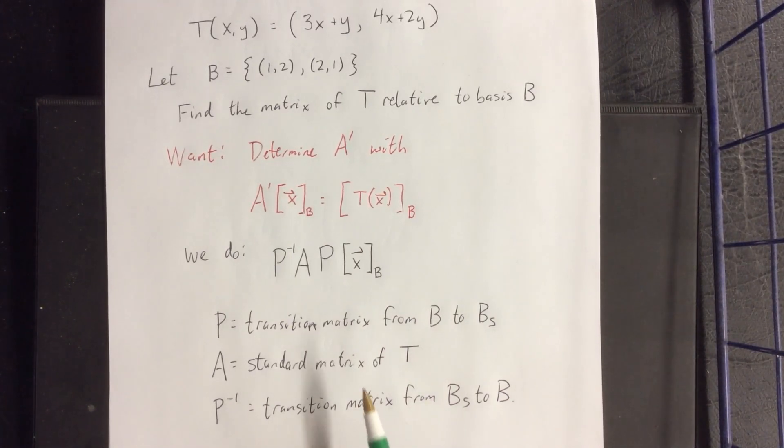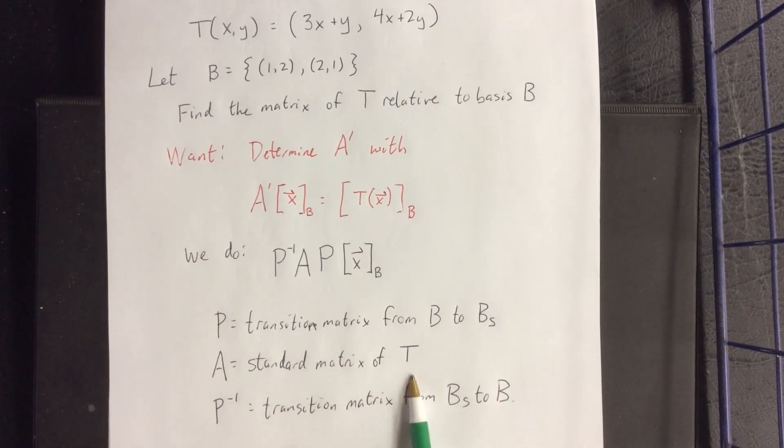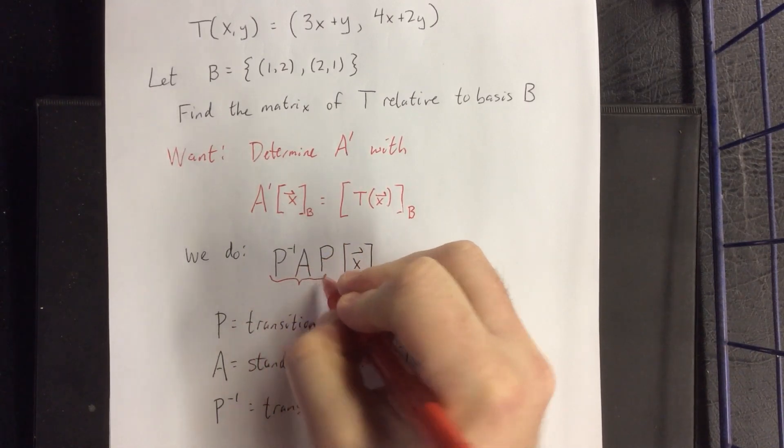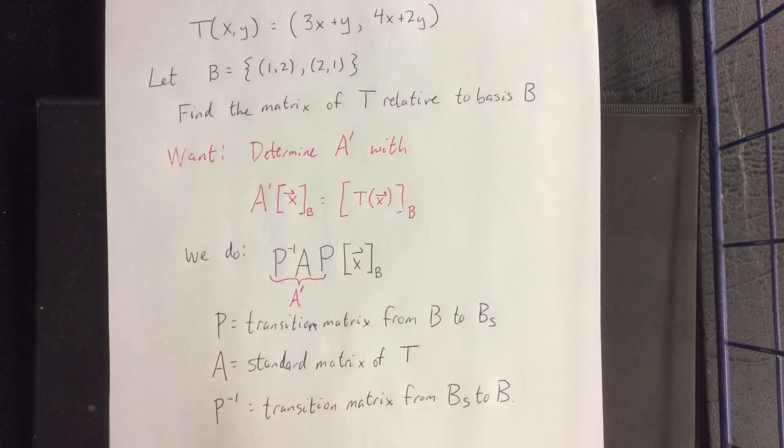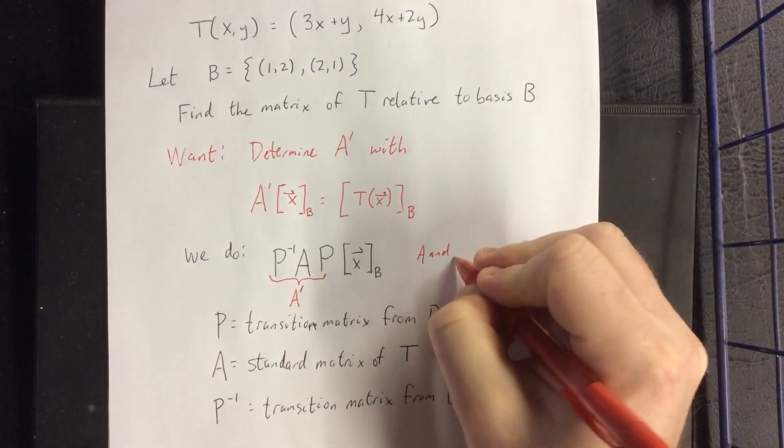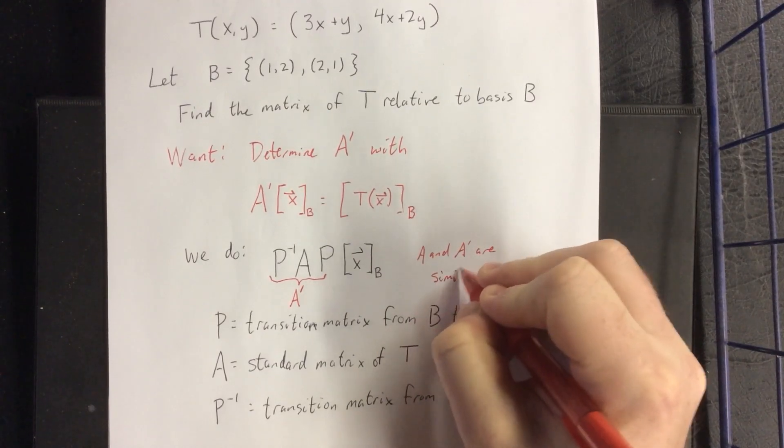So again, three-step process: transition the representation in the non-standard basis to the standard basis, find the image of that by multiplying by the standard matrix of transformation, and then transition back to our non-standard basis. So this guy right here, P inverse times A times P, we're going to know that thing as A'. We say that A and A' are similar matrices.